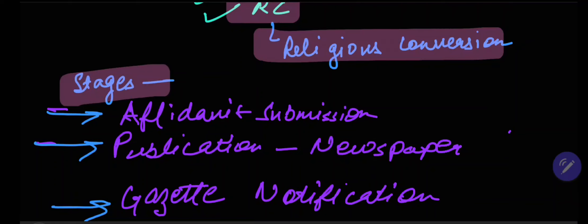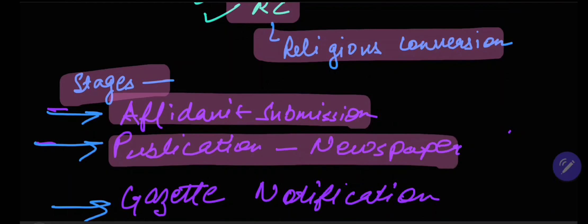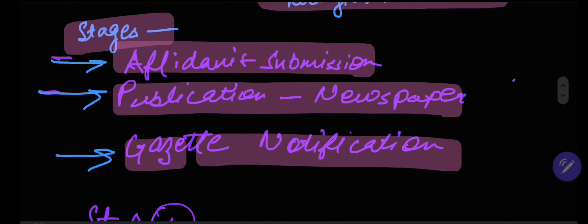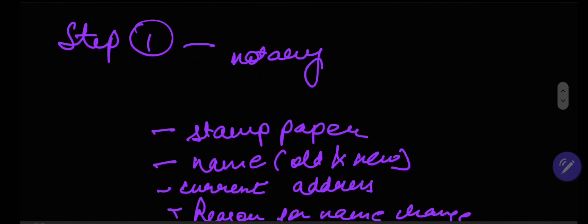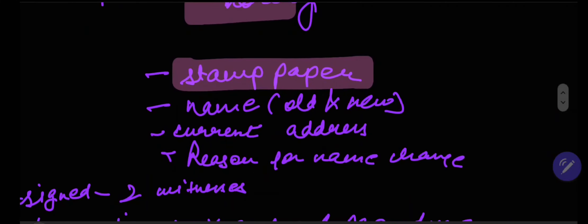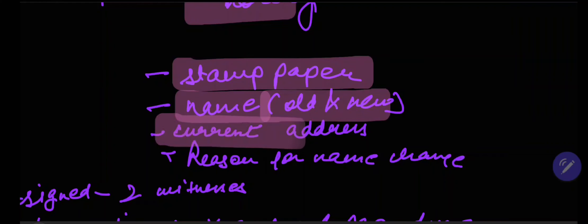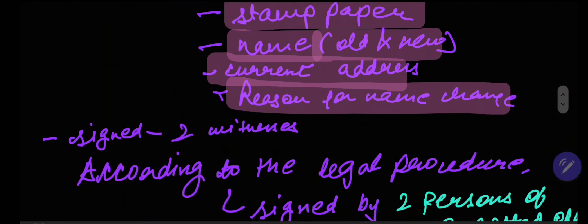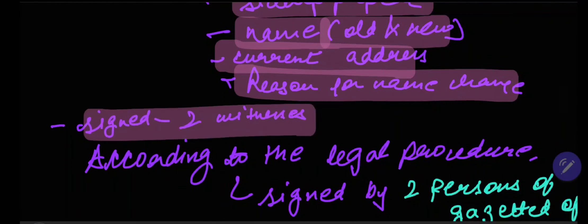What are the stages involved? Different stages include affidavit submission, publication in a newspaper, and the gazette notification. Let's talk about stage one or step one. In the affidavit submission, where does that happen? In the notary office. And you will get to know about what stamp paper has to be used by the officials there only. And you need to provide information which includes your name, old and new, your current address, and the reason for name change. This affidavit needs to be signed by two witnesses.